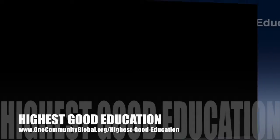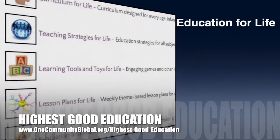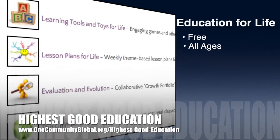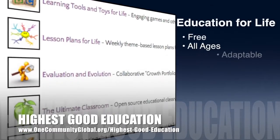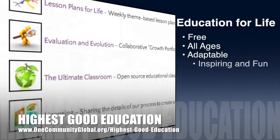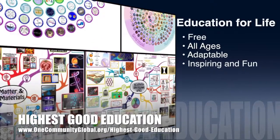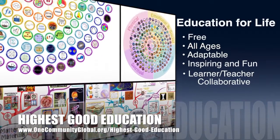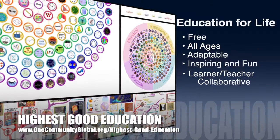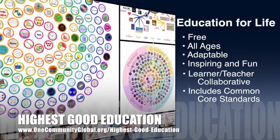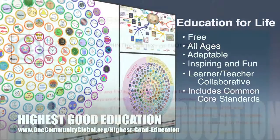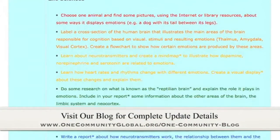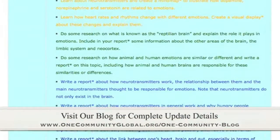One Community's approach to highest good education is open source and free shared, designed for all age groups, adaptable to any schooling environment, inspiring and fun for all participants, a learner-teacher collaborative, and it includes U.S. common core standards. This week the core team — which includes pioneer members plus those helping who don't wish to be individually acknowledged — made significant progress.